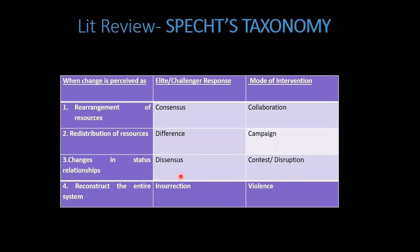This is Spec's taxonomy and it talks about four levels of changes brought about in society by social innovators, represented by these four rows. I will only be discussing the first row, where the change is perceived as a rearrangement of resources and the social innovator introduces change into a new societal context.